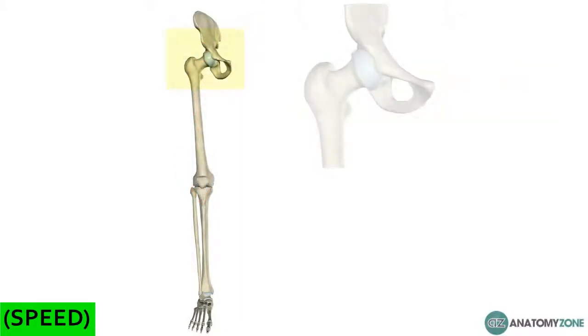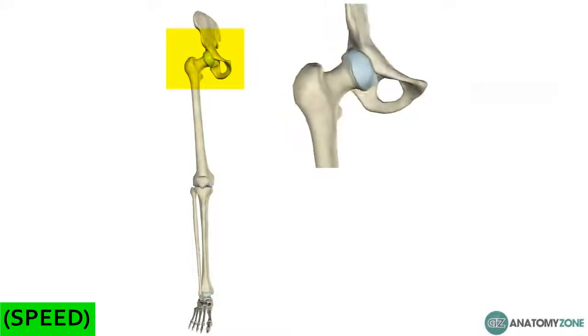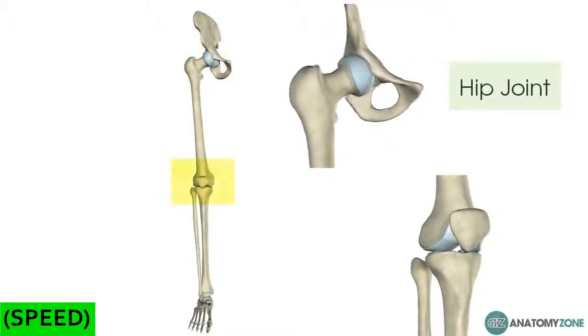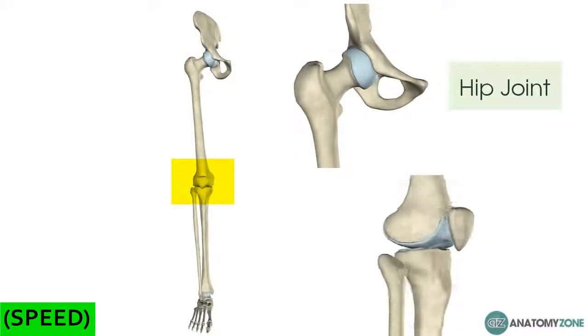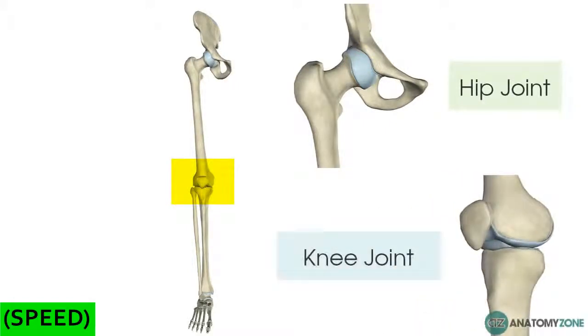Superiorly it articulates with a part of your hip bone called the acetabulum to form the hip joint, and inferiorly it articulates with the patella to form the patellofemoral joint and the tibia to form the tibiofemoral joint, or what we would collectively call the knee joint.